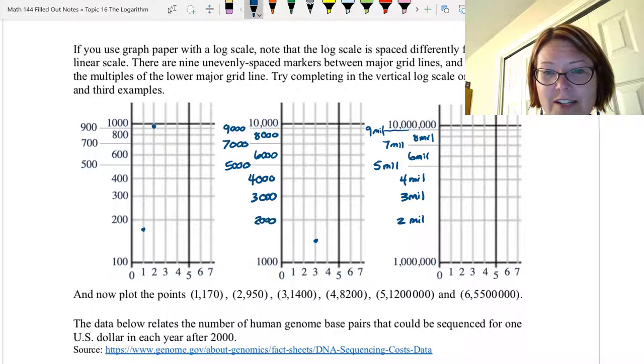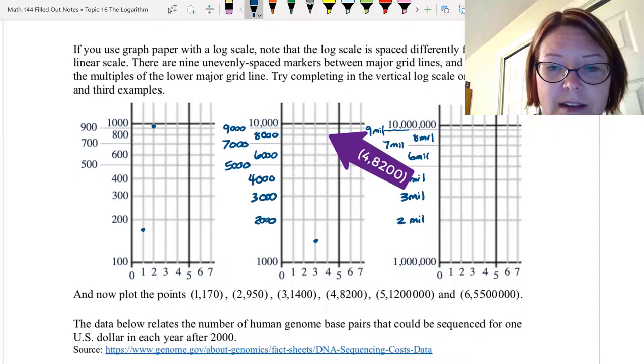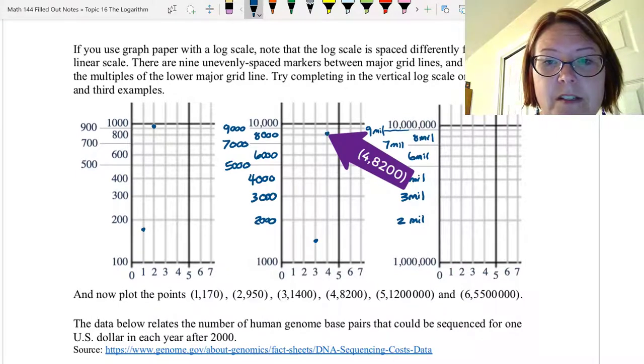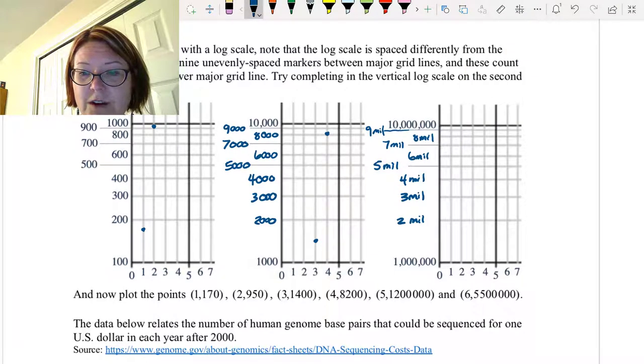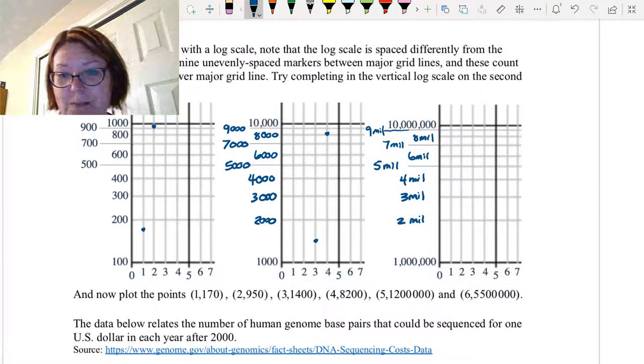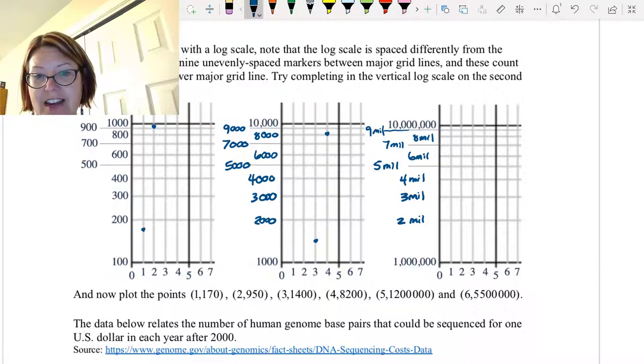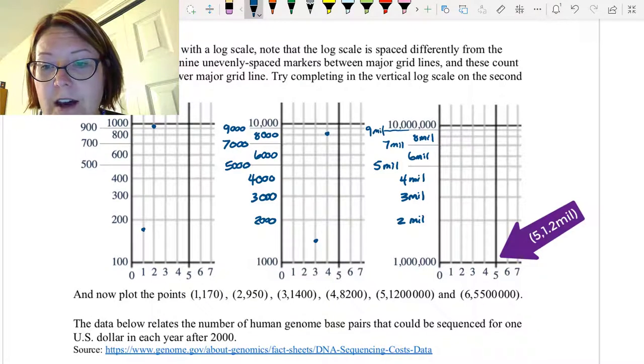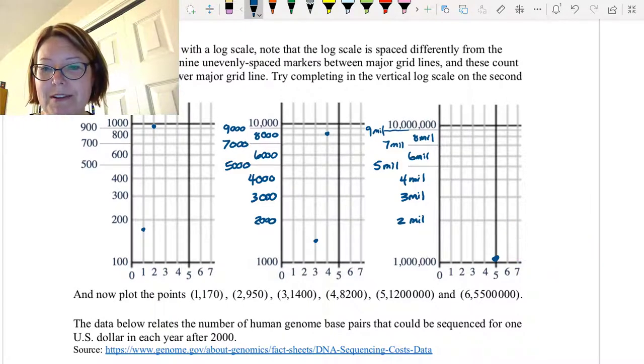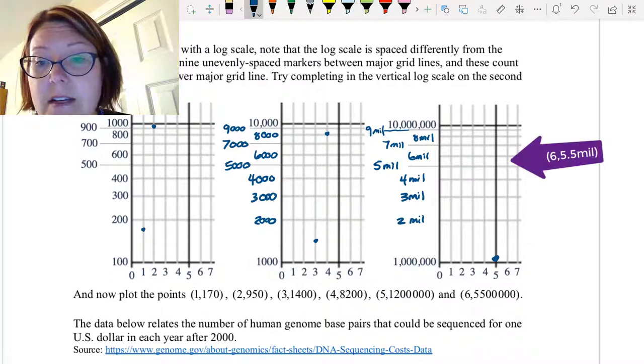(4, 8200) would be between the 8000 and 9000 minor grid lines. So 4 comma 8200 would be just above the 8000. (5, 1,200,000): Let's jump over to that last graph now. 1,200,000 is going to be between 1,000,000 and 2,000,000. So between the major grid line and the first minor grid line. So 5 comma 1,200,000 is close to the bottom there, closer to the 1,000,000 than the 2,000,000. And finally (6, 5,500,000) would be between 5 and 6 million as the minor grid lines. So 6 comma and then 5,500,000, somewhere in the middle of that.